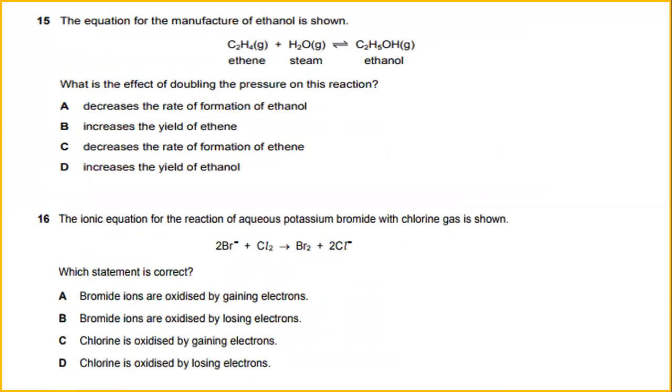The equation for the manufacture of ethanol is shown. What is the effect of doubling the pressure on the reaction? The higher the temperature, the higher the equilibrium yield of ethanol. So the answer will be increases the yield of ethanol.